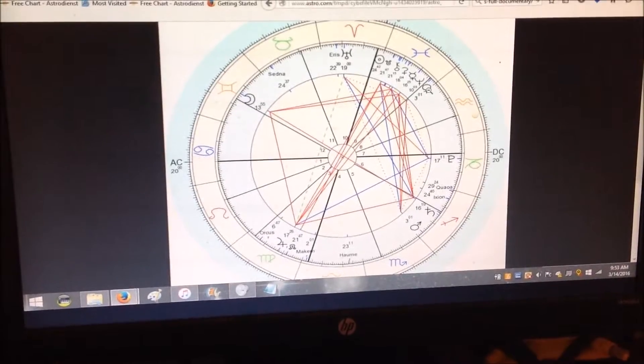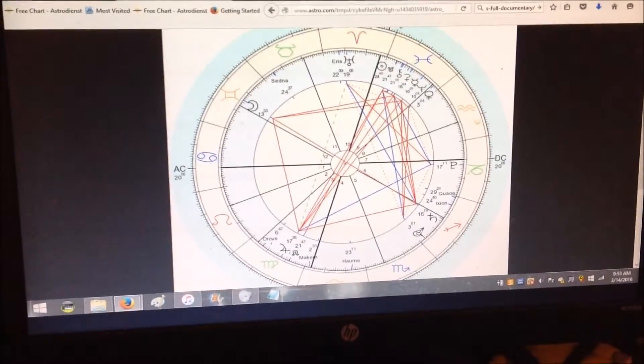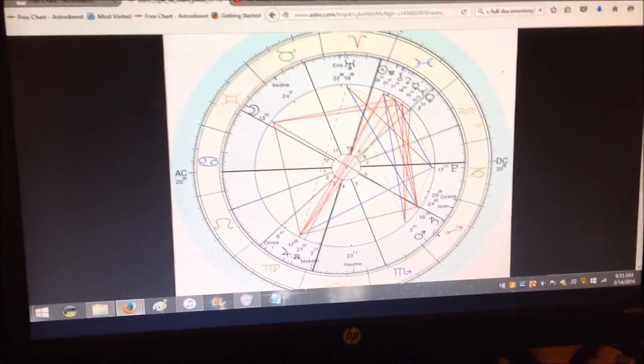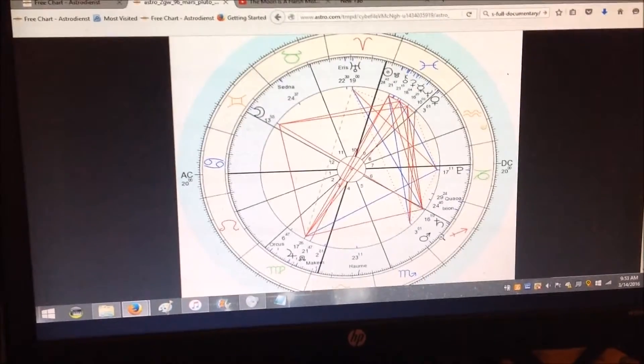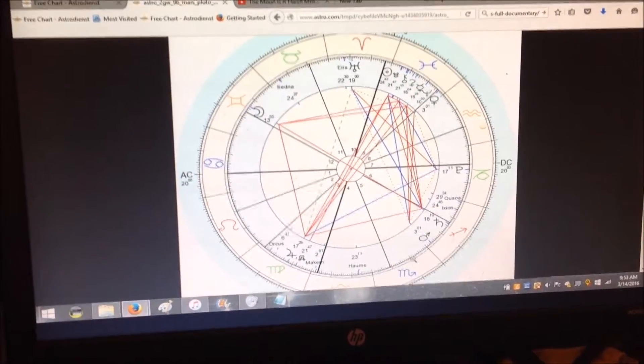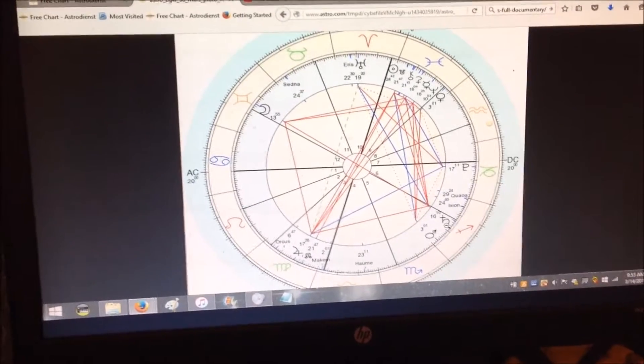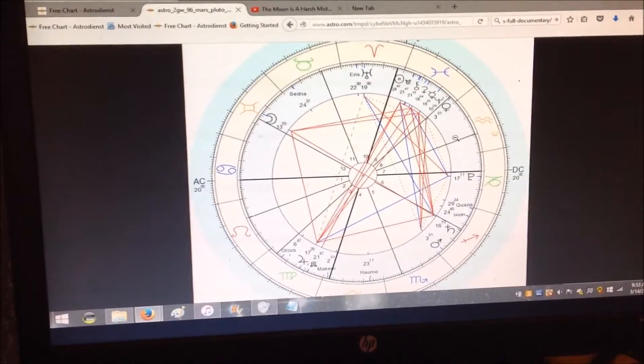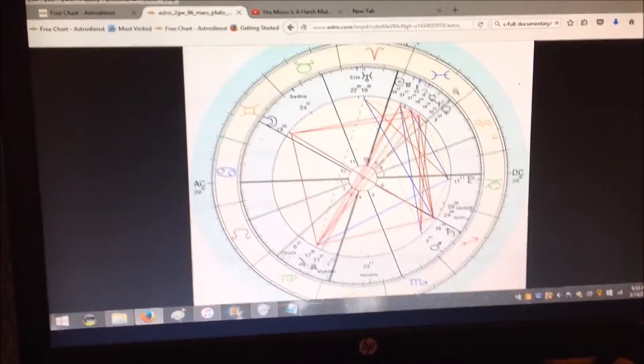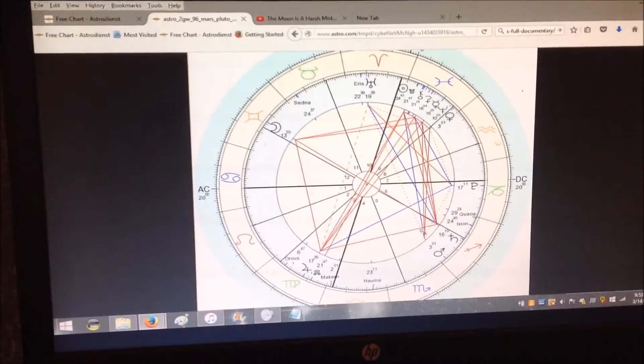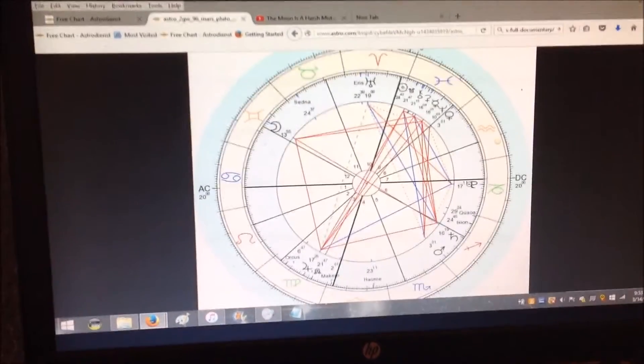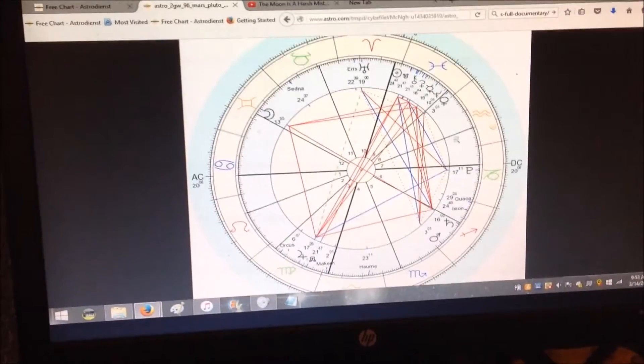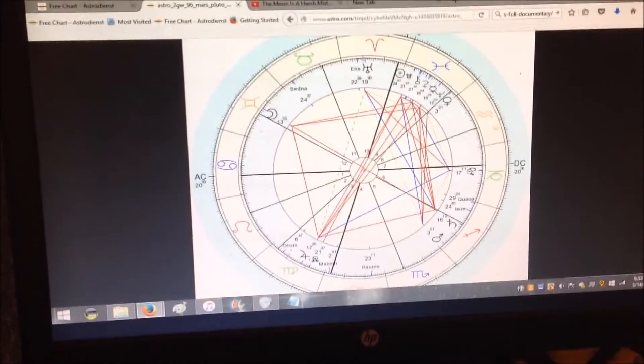We have Venus in Pisces now square Mars. Mars is stuck. It's going to keep moving slower and slower until it gets to about seven, eight degrees Sagittarius, and it's going to retrograde slowly back into Scorpio and then back for several months. So right now we have what I call a square semi-square complex. When you have Venus in Pisces square Mars in Sagittarius, and then Pluto directly in the middle, when you have a planet in between two squaring or sextiling planets, you have a semi-square or semi-sextile complex.